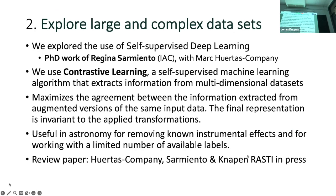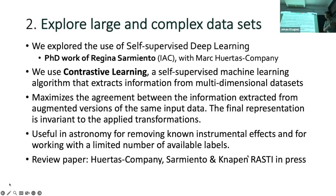For exploring large and complex data sets, this is work from the PhD of Regina Sarmiento with my group, where we explore the use of self-supervised deep learning using contrastive learning — a self-supervised machine learning algorithm that extracts information from multidimensional data sets. It maximizes agreement between information extracted from augmented versions of the same input data, so the final representation is invariant to the transformations applied. This is useful in astronomy for removing known instrumental effects and for working with a limited number of available labels.